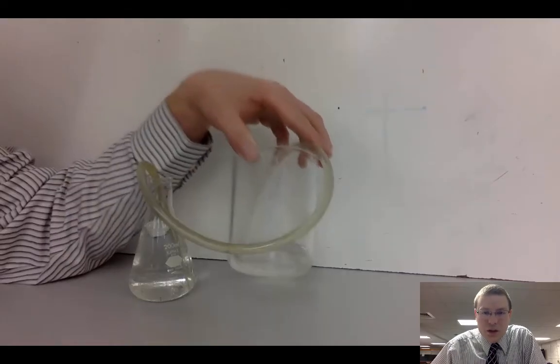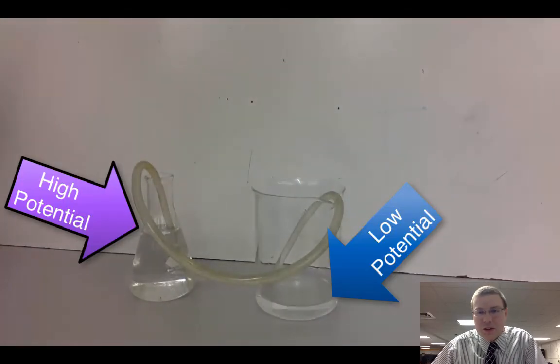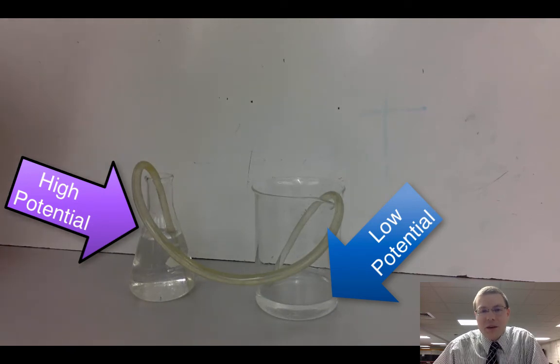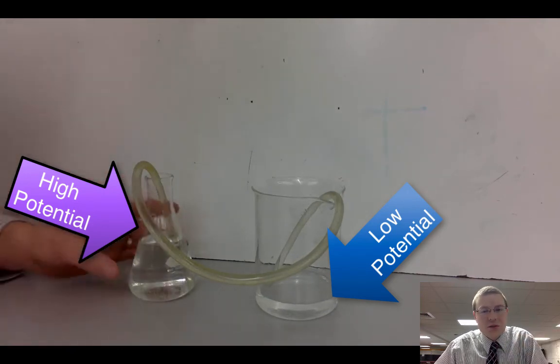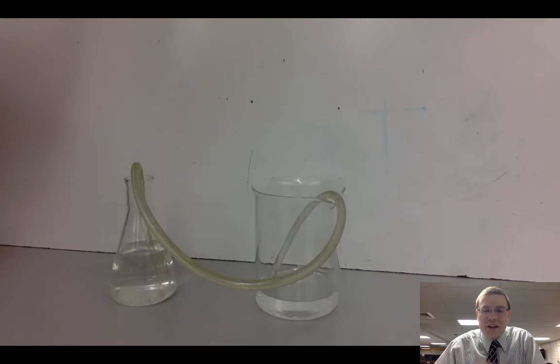And that's what we're showing you here with the water example. With the water example, you can see that that beaker on the left has a much higher voltage or higher potential than the beaker on the right. And the water is going to flow from high to low potential.